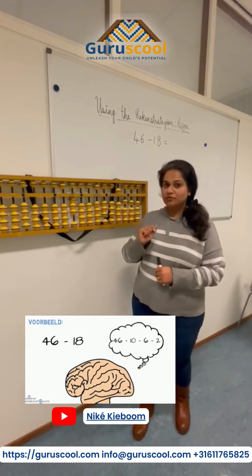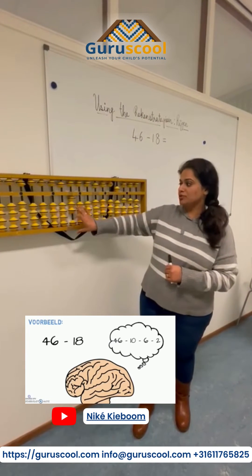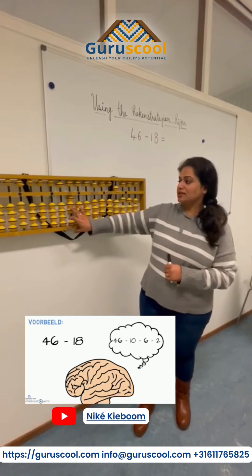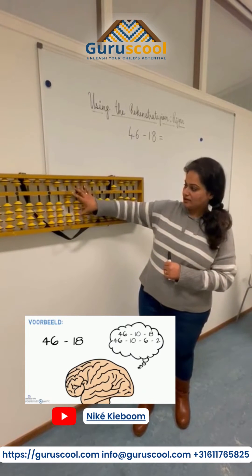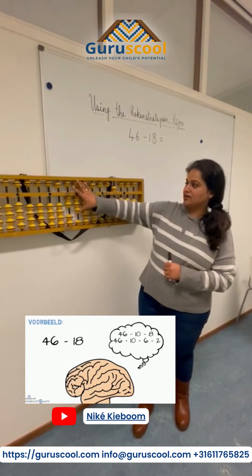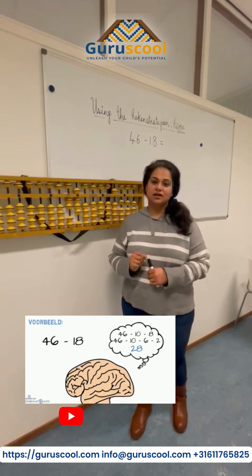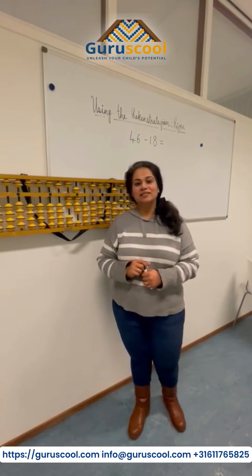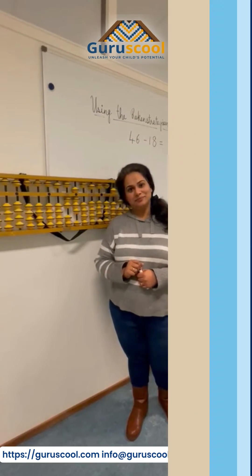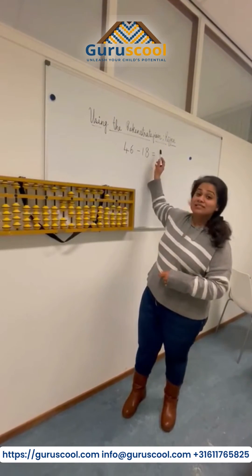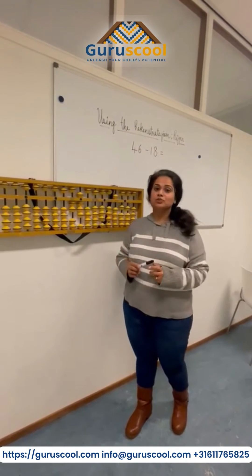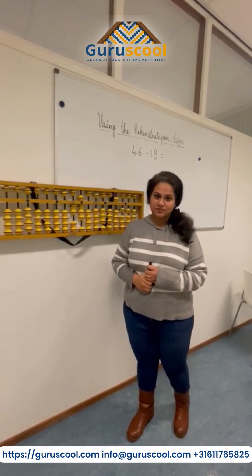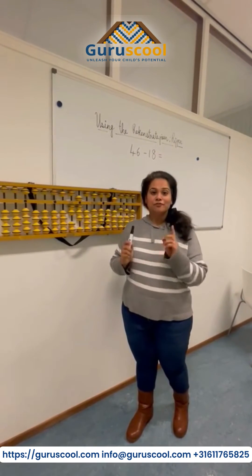When we follow the Abacus method for minus 2, it says 10 goes away and 8 comes. That gives us the answer 28. This is the basic strategy that is used with the Abacus. Follow us for more such videos.